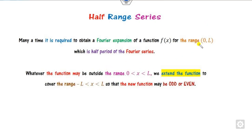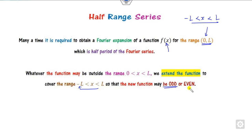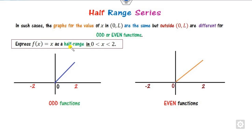Whatever function is outside this domain — since our Fourier series is defined over here — I need the function over the domain 0 to l. Whatever is defined outside of 0 to l, we will try to express f(x) into that range, provided the function is either even or odd. For example, if f(x) = x over the domain 0 to 2, our target is to express this as a Fourier series over the domain from minus 2 to plus 2.